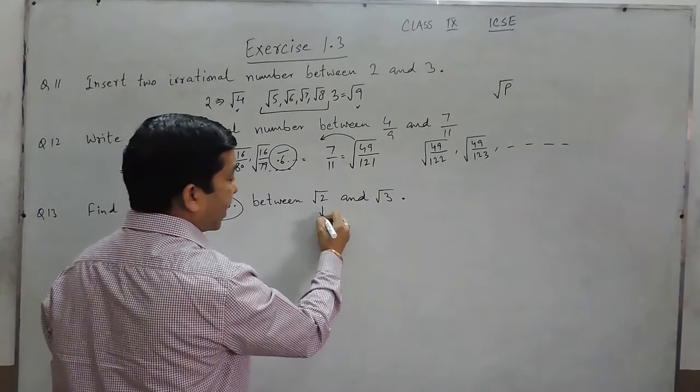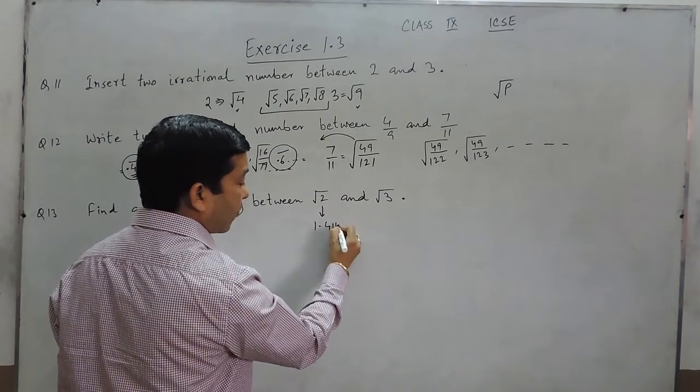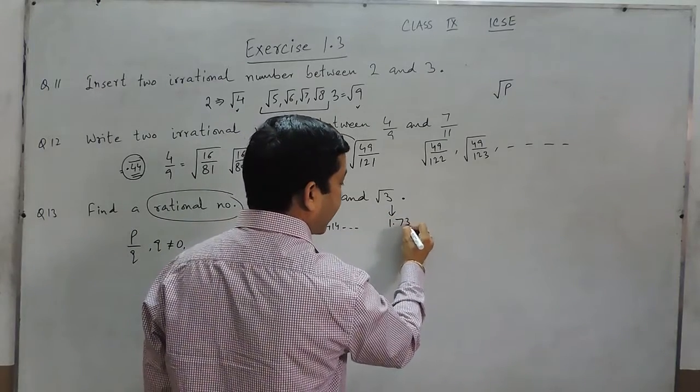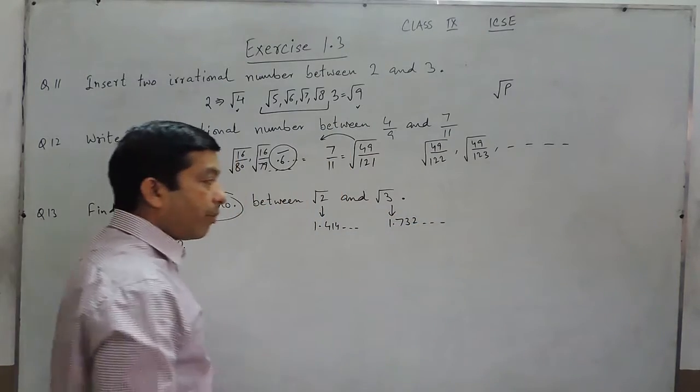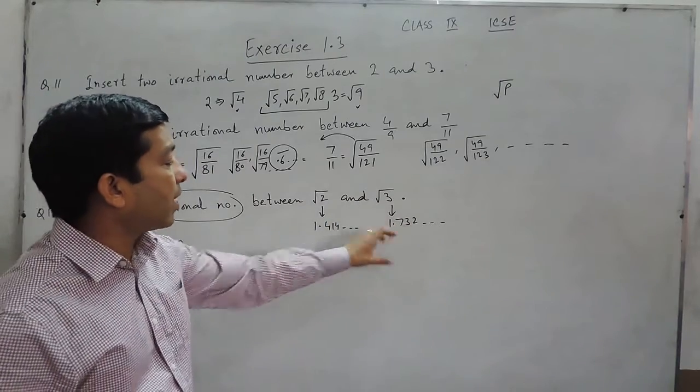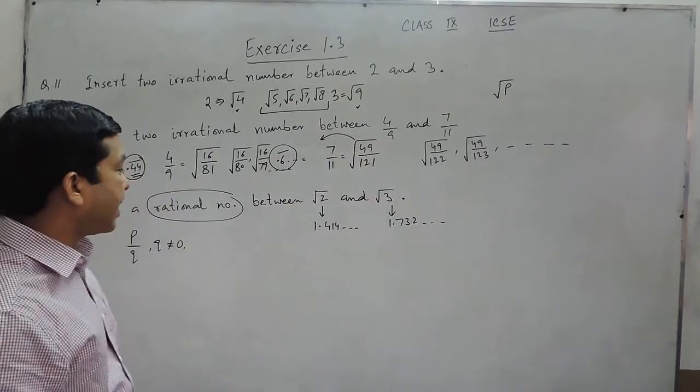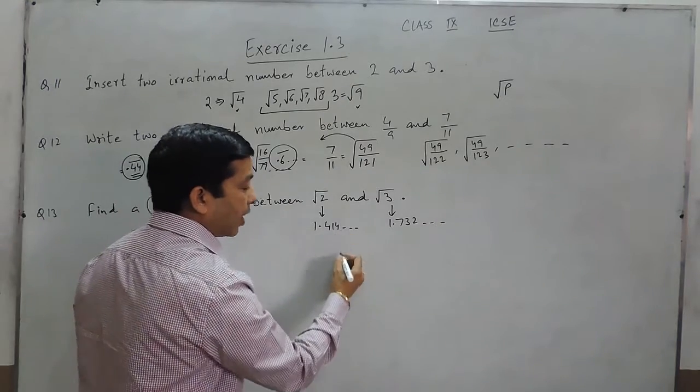Here we understand the value of root 2 is 1.414 and so on. While the value of root 3 is 1.732 and so on. Because these are irrational numbers, so this will go up to infinity and they are also not repeating decimals. When we talk about any number in between,